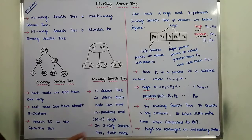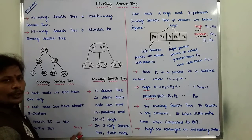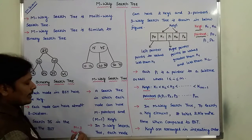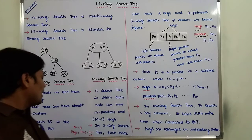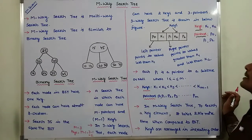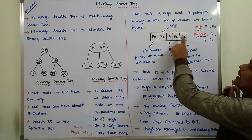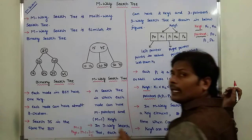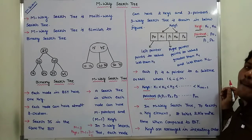Suppose we are taking a 3-way search tree, that means M is equal to 3. In a 3-way search tree, the number of keys is M minus 1, that is 3 minus 1 equals 2 keys. The number of pointers is M, that is 3 pointers: P0, P1, P2. For K1, P0 is the left pointer pointing to a subtree with values less than K1, and P1 is the right pointer pointing to a subtree with values greater than K1. P2 is the right pointer pointing to a subtree with values greater than K2.